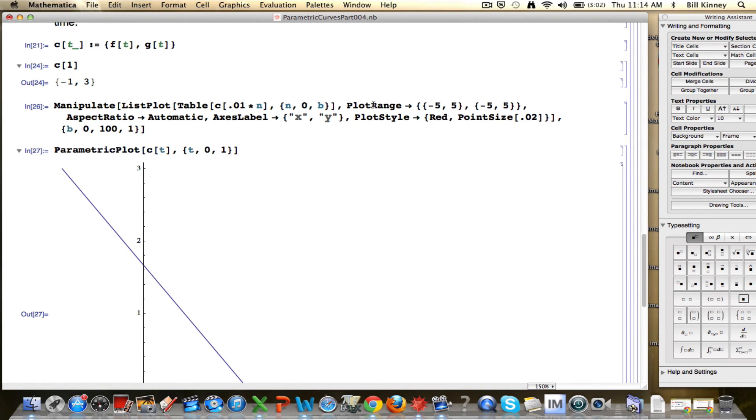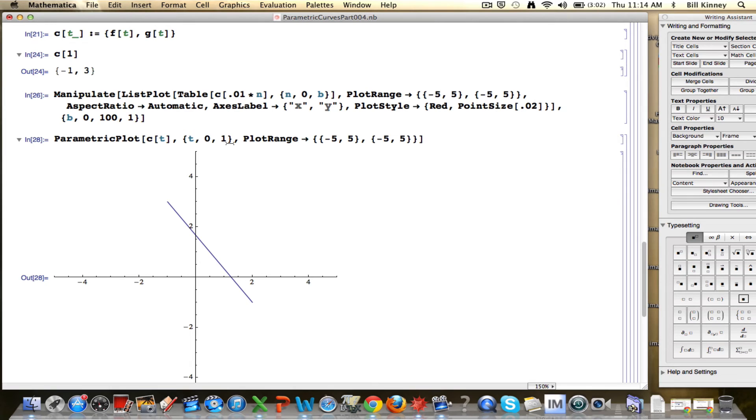Notice Mathematica picked the particular window for me. Just like before, I can change the plot range to pick the window myself. Just copying and pasting that here. There we go. It looks like the axes are by default the same scale here, so we probably would need an aspect ratio automatic. I can do a plot style red, for example, to make it red. I can make it thicker by adding a thick in here. There we go. There's the parametric curve.